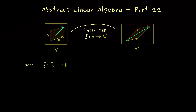Before we go into the abstract concept, let's first recall what we know in Rn. We could have a linear map that maps Rn into Rm, and then it was possible to construct a matrix that represents this linear map. This matrix A has exactly n columns and m rows, so we write it's an element of R to the power m times n. Moreover, we also showed that we have the opposite direction — each matrix induces a linear map. We can go from the abstract concept of a linear map to the concrete one of a matrix and the other way around, and this will also hold in the general context of general vector spaces.